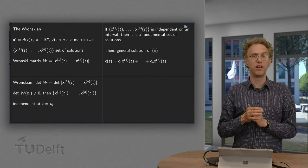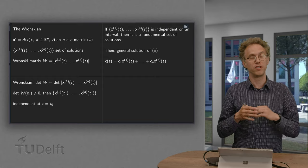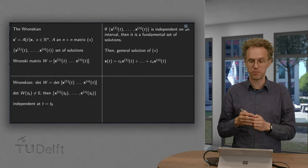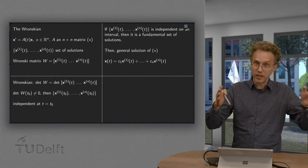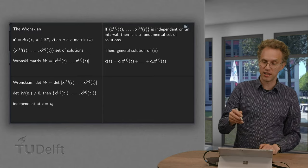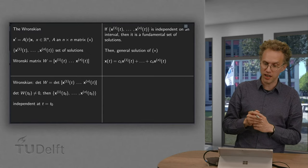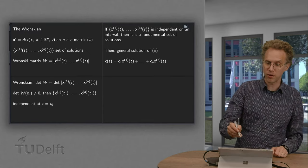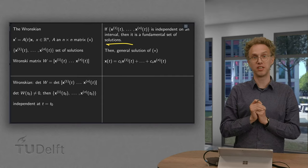And then if this Wronskian is non-zero on a whole interval, so for a number of values of t, then the set is independent on this entire interval. And then the set is called the fundamental set of solutions.